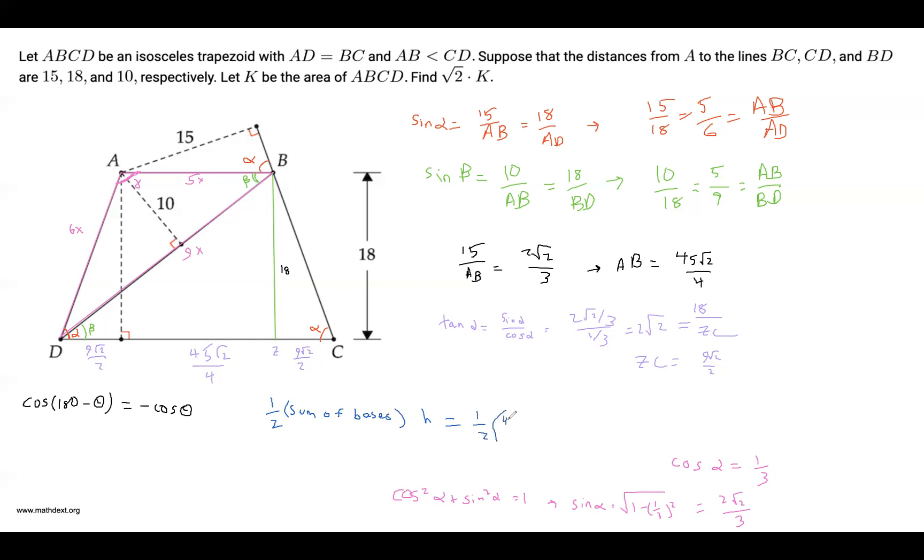one half of 45 root 2 over 4 plus the other base is 45 root 2 over 4 plus 2 times 9 root 2 over 2. And then the height is 18. So we can write this as 9, that's 18 over 2 times,